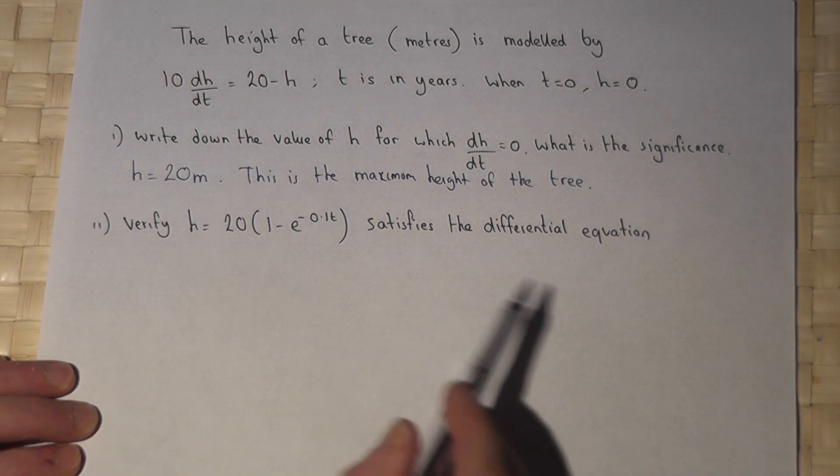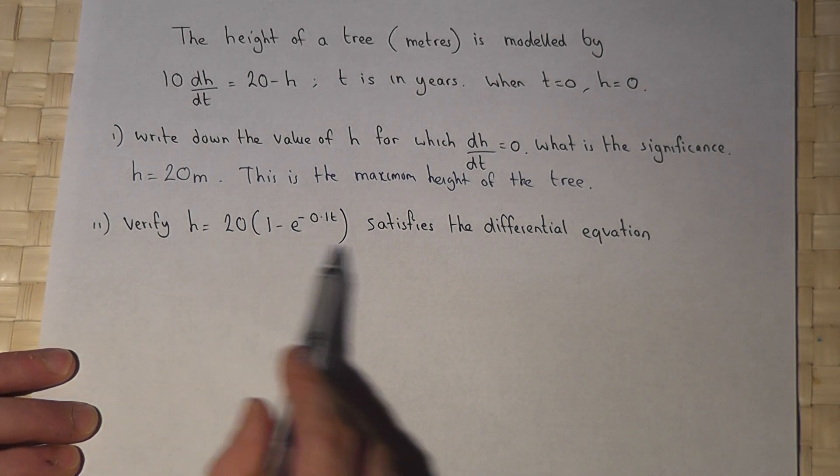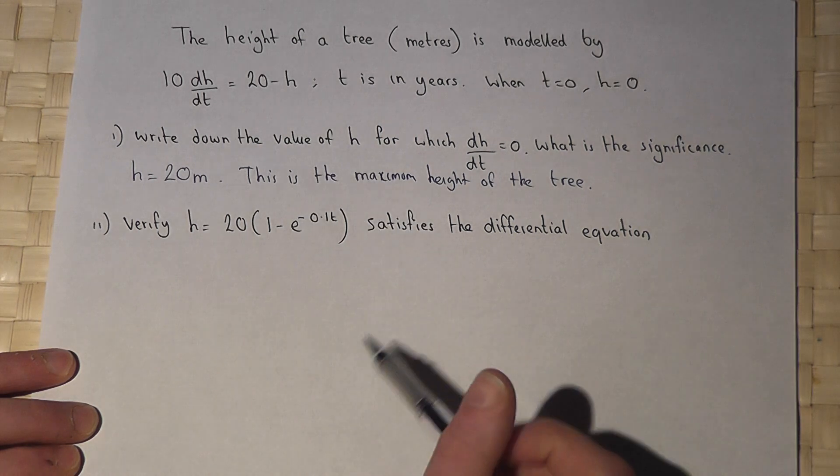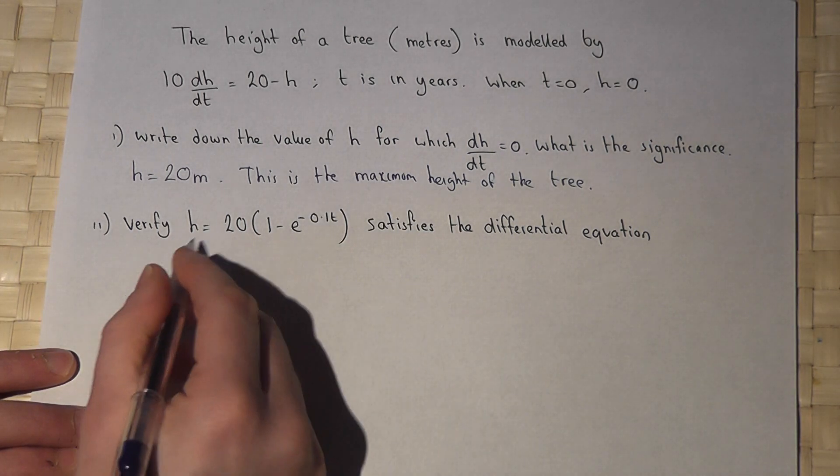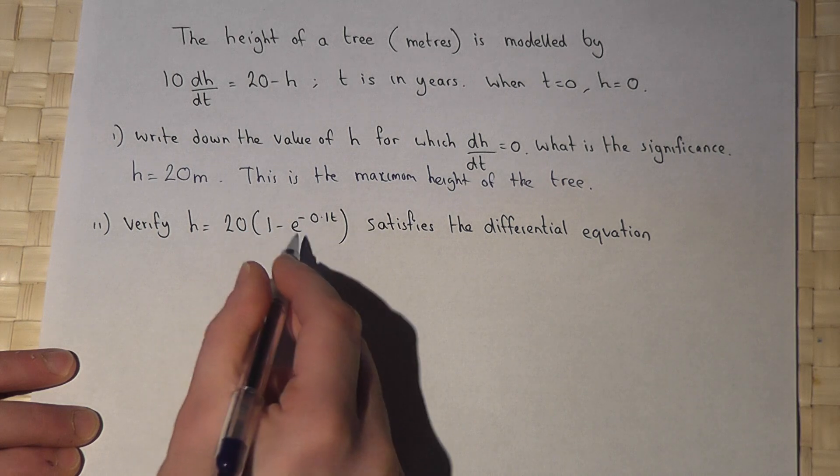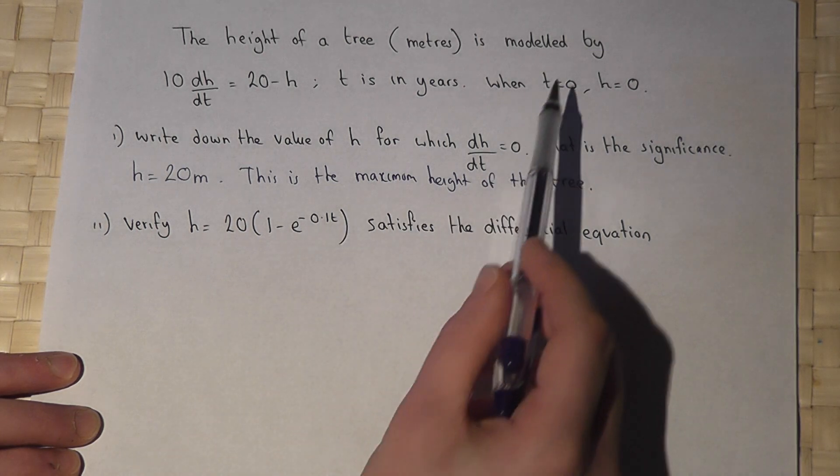In part two we're asked to verify that the given formula satisfies this differential equation. h equals 20 brackets 1 minus e to the minus 0.1t. We must first of all check that when t